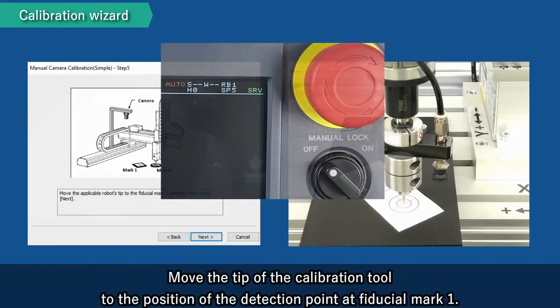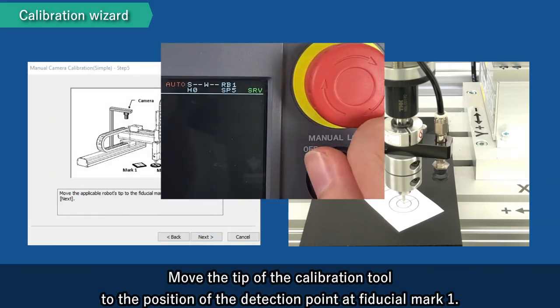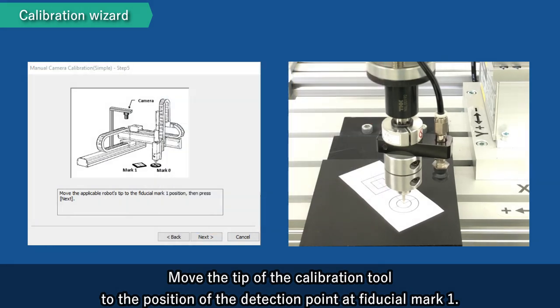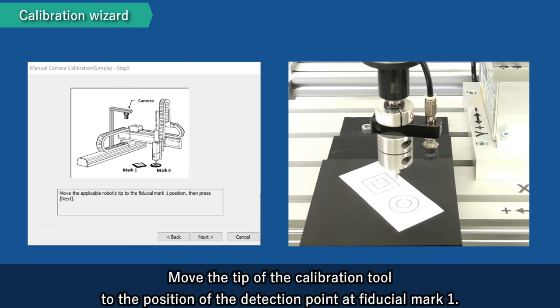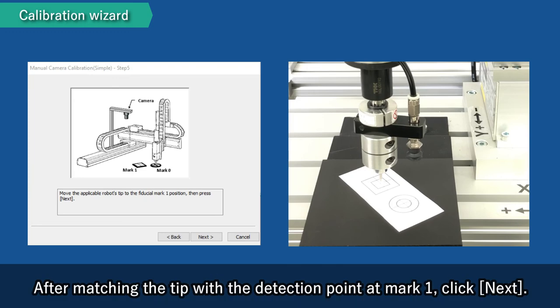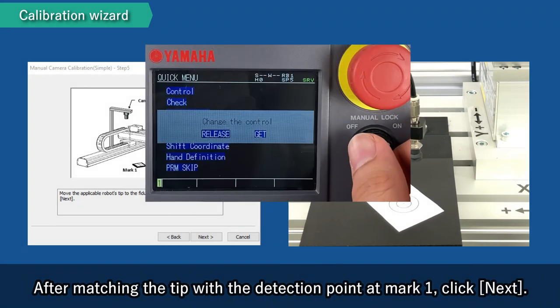Move the tip of the calibration tool to the position of the detection point at fiducial mark 1. After matching the tip with the detection point at mark 1, click Next.